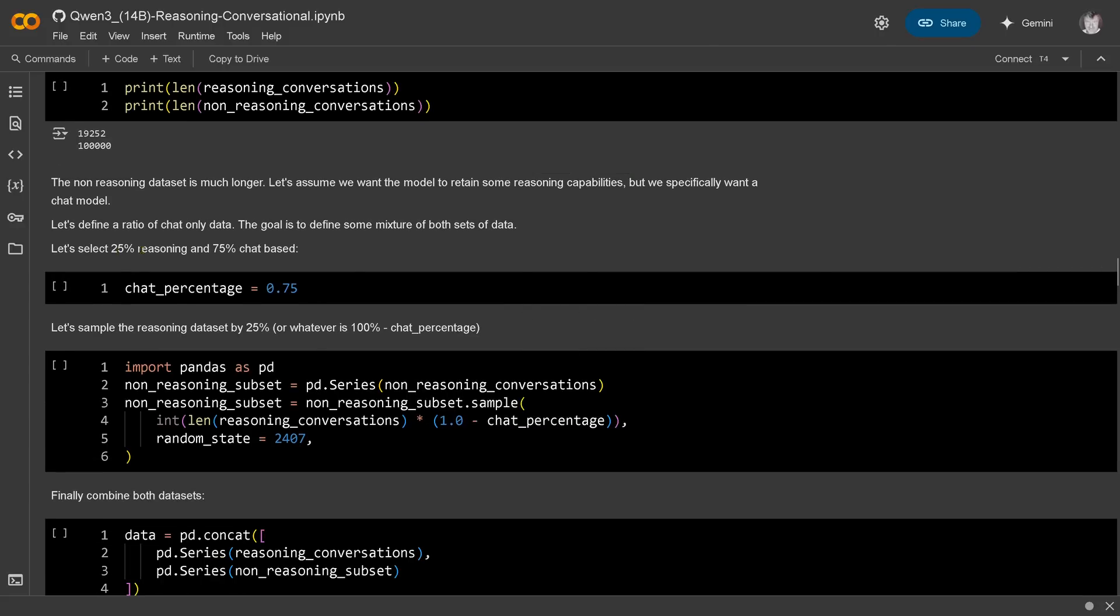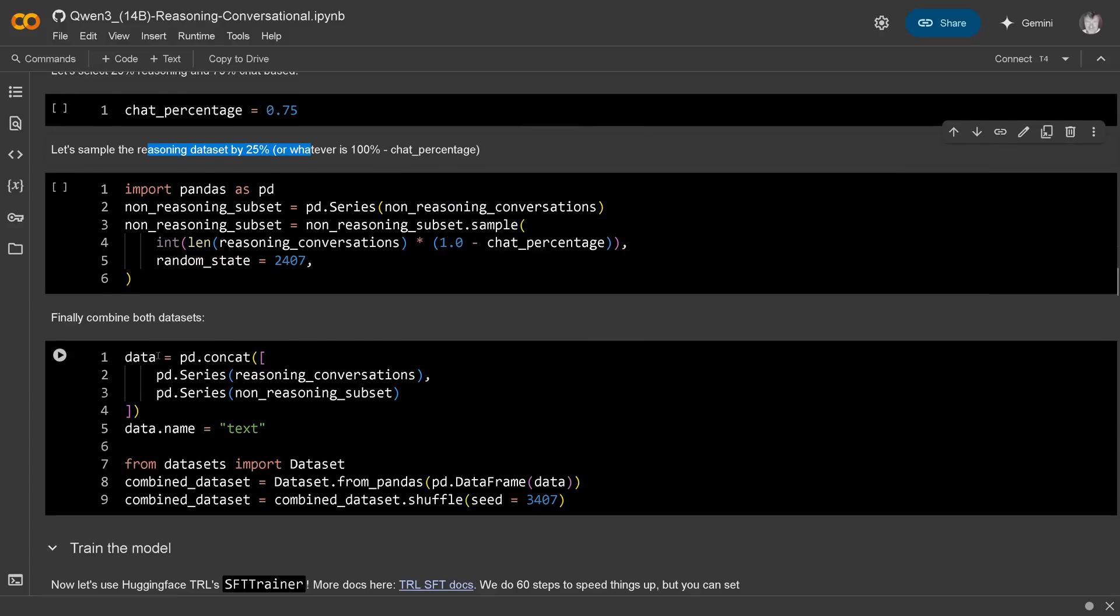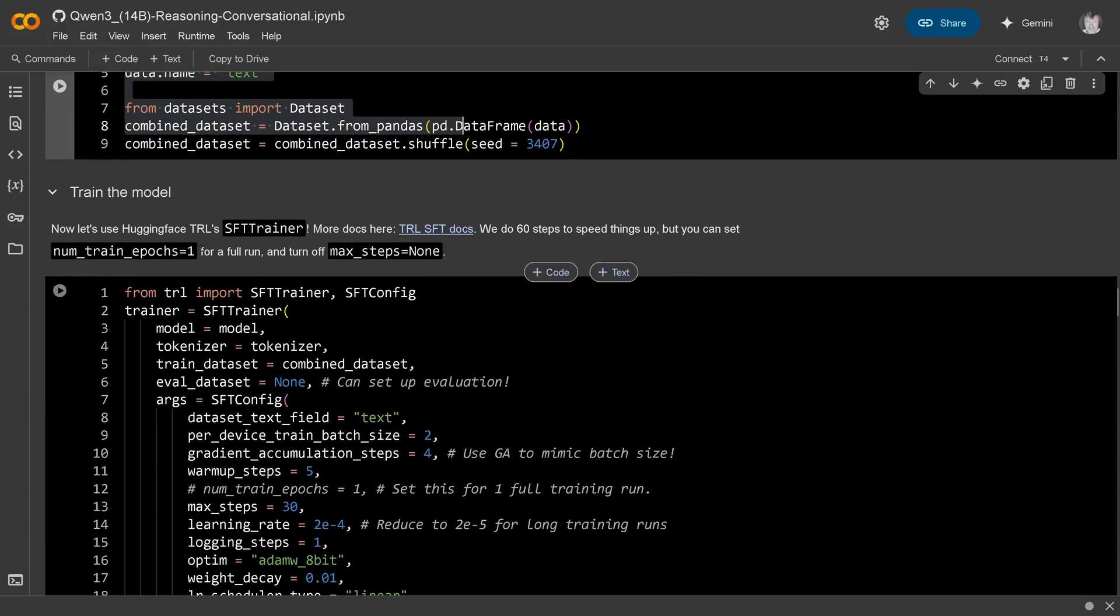If you look at this, so this is the first example from those data sets. And then you use here a function to fix up the format for the specific data set. If you have a look at this, it looks like this now, beautiful. Then let's select 25% reasoning and 75% chat-based, beautiful. Let's sample the reasoning data set, 25% set, and then combine the data set. And then, finally, we train them all. Yes, here we are fine-tuned now, the model.